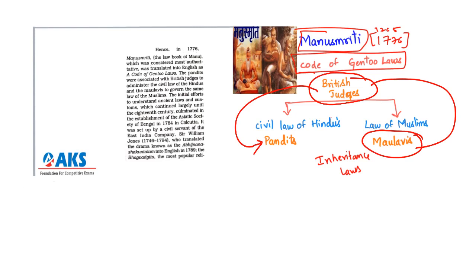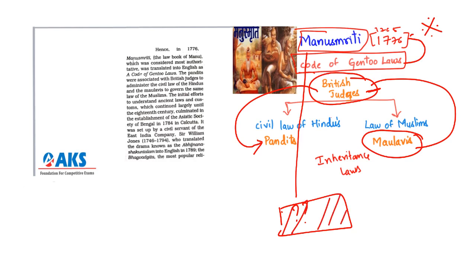Remember: Manu Smriti was translated as Code of Gentoo Laws in 1776 — UPSC has once asked a question on this. There is no clear name of who translated it; it was likely a collaborative effort of many people working with the British judges. The process of understanding ancient laws and customs continued through the 18th century and culminated in the establishment of the Asiatic Society of Bengal.